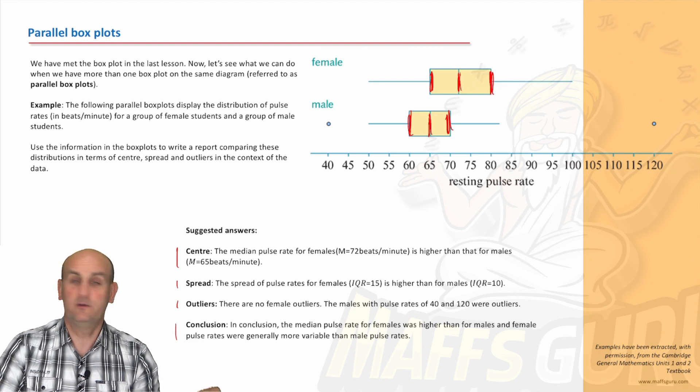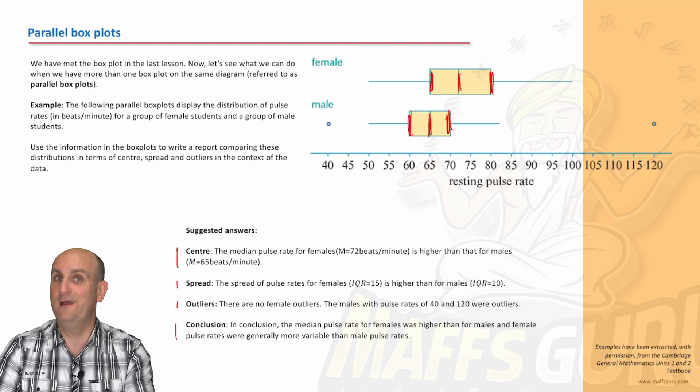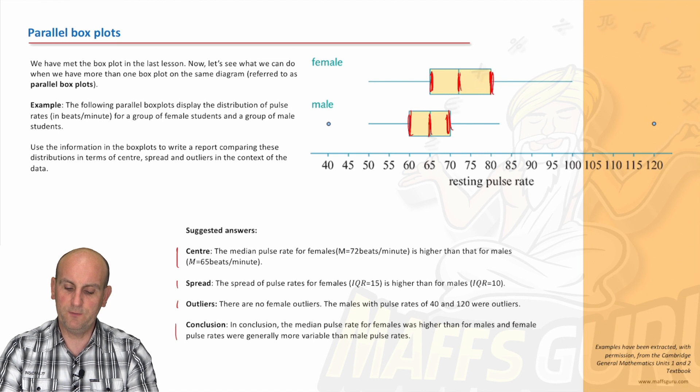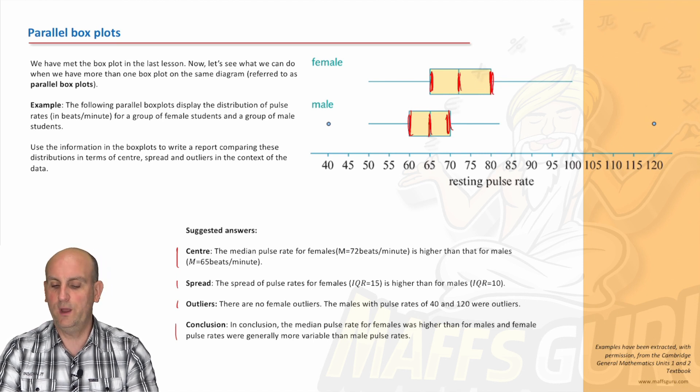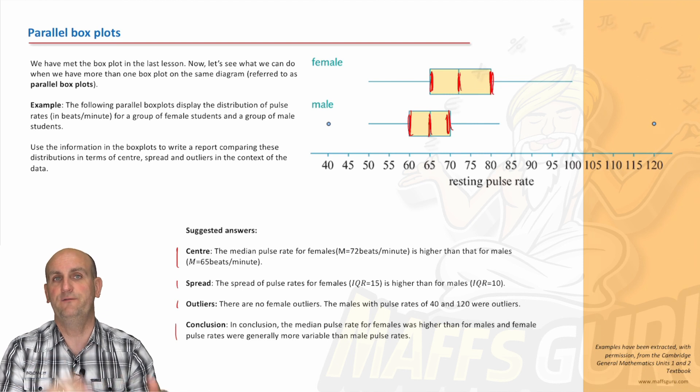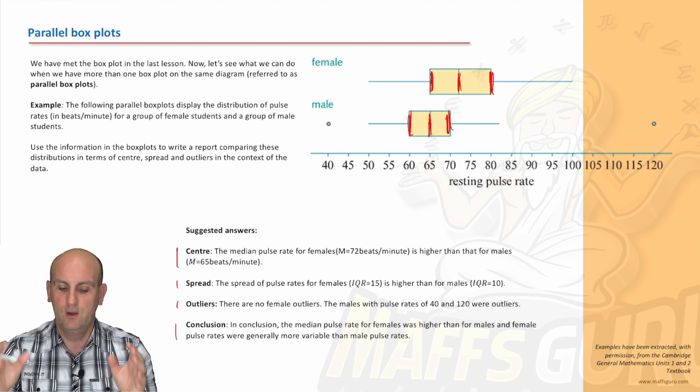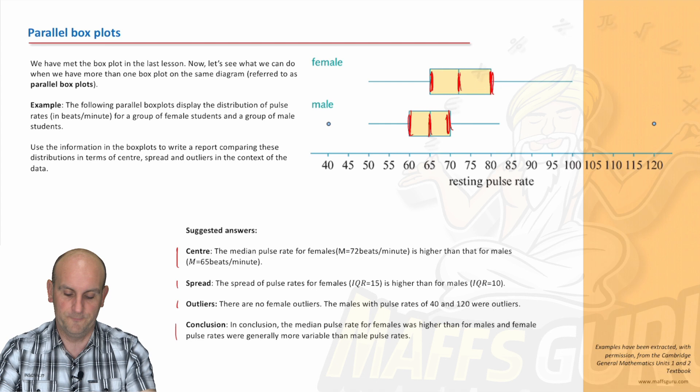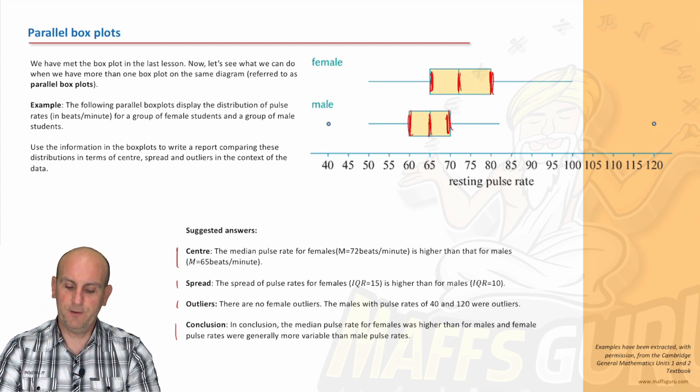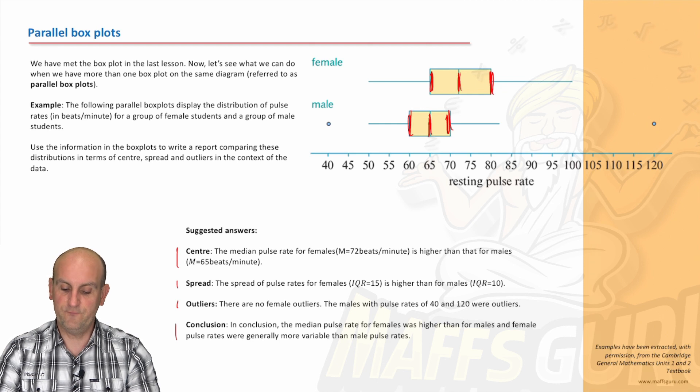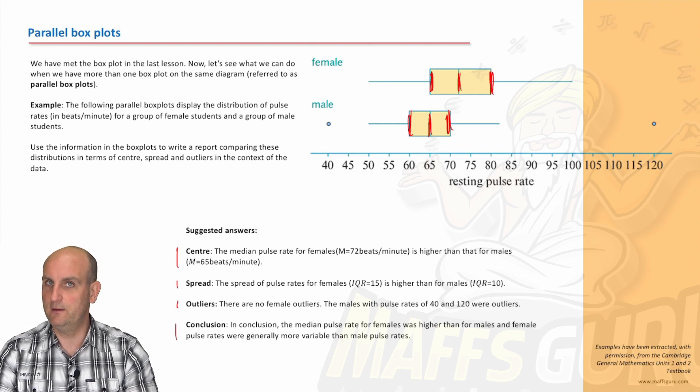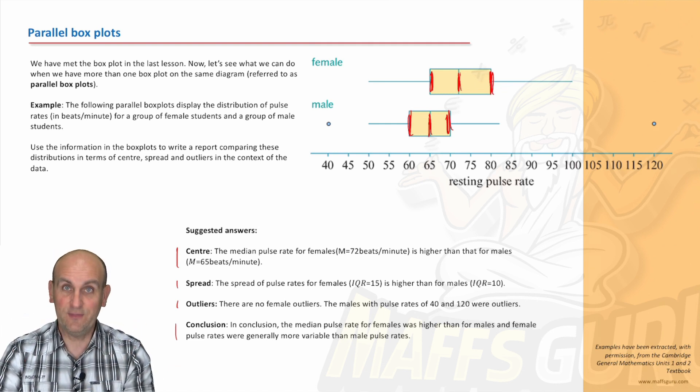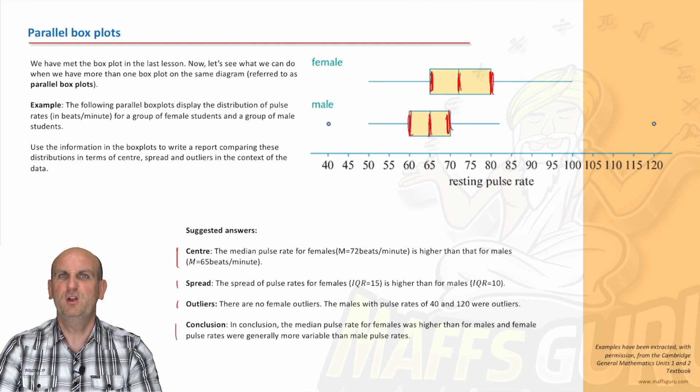What about outliers? Now, we didn't talk about outliers before, because there weren't any, but they certainly are here. And if they're there, you must talk about them. There are no female outliers. Ka-ching! Talk about stating the obvious. But with males, the pulse rates of 40 and 120 were outliers. You are stating the facts. We didn't need to work out the fences. We didn't need to do any of that. We're just stating the facts. And so, now, we pull it all together. We've stated some information. Now, we're gonna conclude. In conclusion, the median pulse rate for females was higher than for males, and female pulse rates were generally more variable than male. Now, more variable, what does that mean? Wider inter-quartile range. Ka-ching! Notice how they're very similar in their wording? Put it in your summary book.